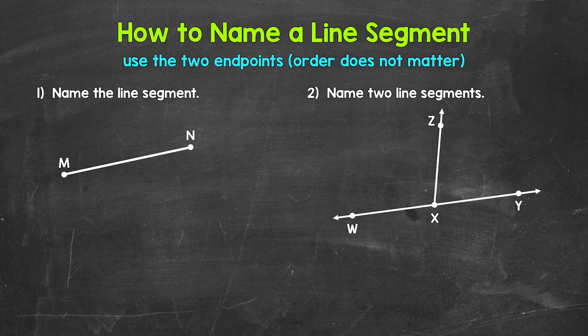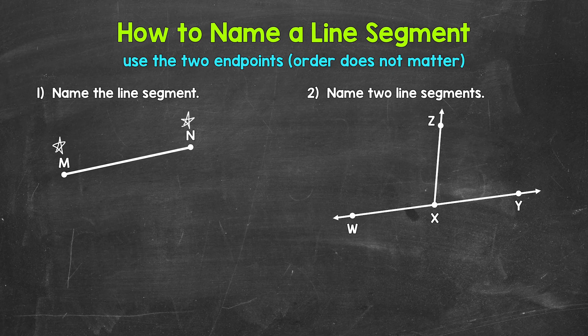For example, in number one, our two endpoints, point M and point N. So to name this line segment, we write our two endpoints, M and N.